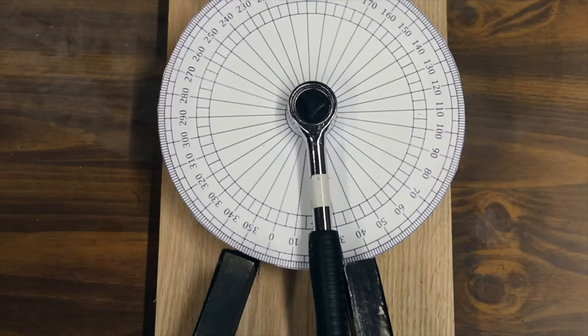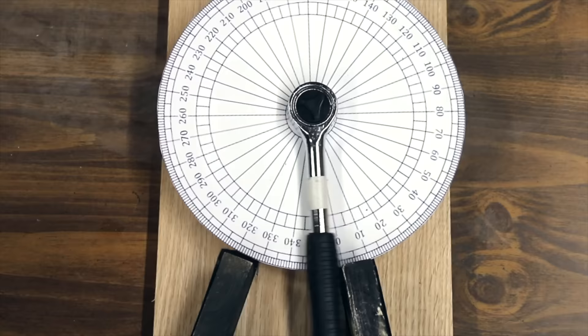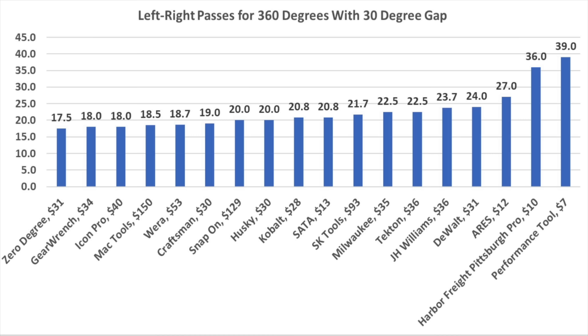The Performance Tools gear set is extremely sloppy and it's only able to advance one tooth at a time within a 30-degree space. The ratchet really struggled in this test and it took 39 right-to-left swings to finally complete one 360-degree rotation. On the other hand, the Gear Wrench and the Icon Pro completed the test in less than half the back and forth passes. The Performance Tool finished in last place in this category.